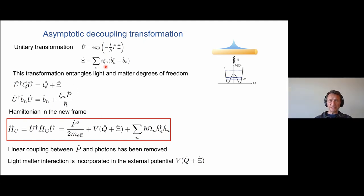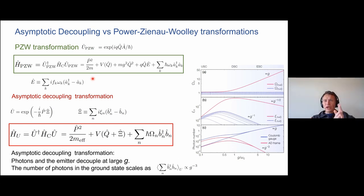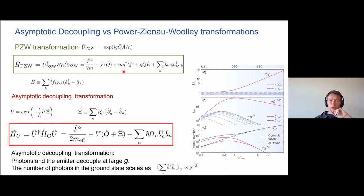I want to contrast this to the well-known Power-Zienau-Woolley (PZW) transformation in quantum optics. The difference is that in the PZW transformation one uses the vector potential and the coordinate of the particle rather than the momentum. After the PZW transformation you still have a linear coupling between the position of the particle and the electric field, whereas in our case essentially all the coupling has been absorbed into the effective potential.